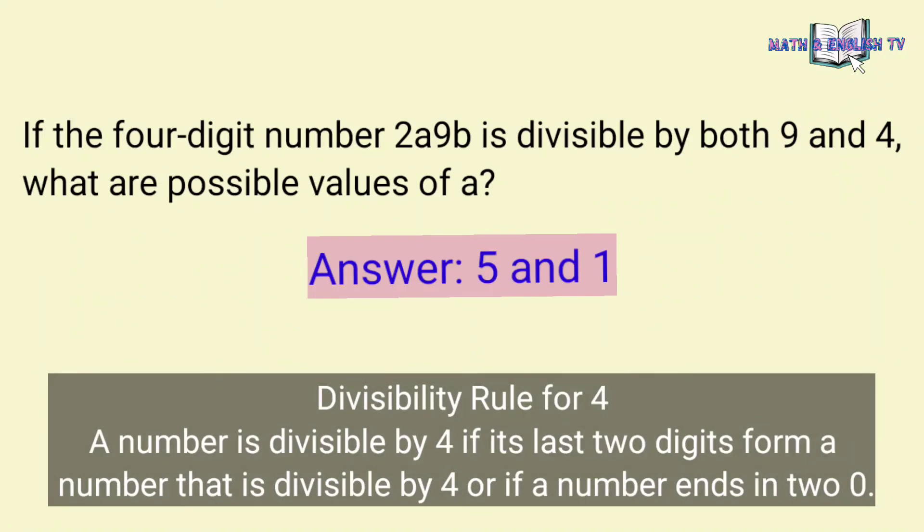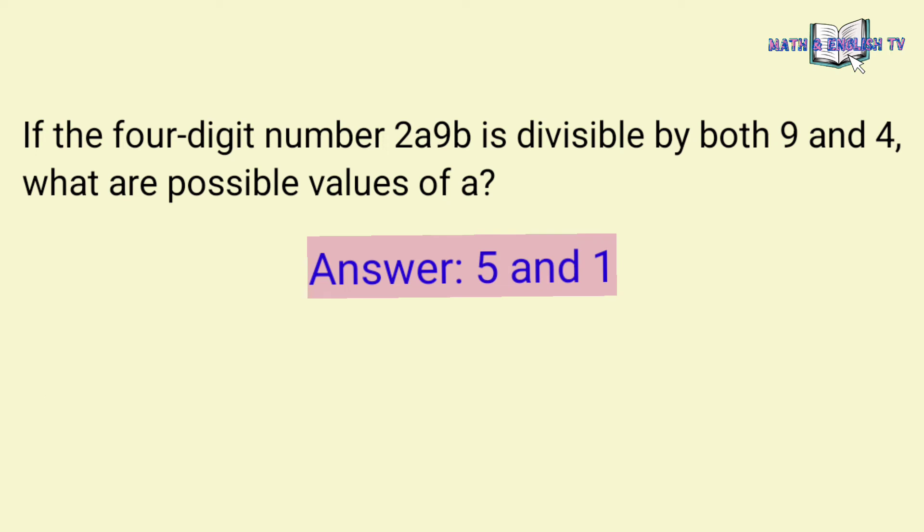A number is divisible by 4 if its last two digits form a number that is divisible by 4, or if a number ends in two zeros. So, the values of B are 2 and 6 because 92 and 96 are divisible by 4.